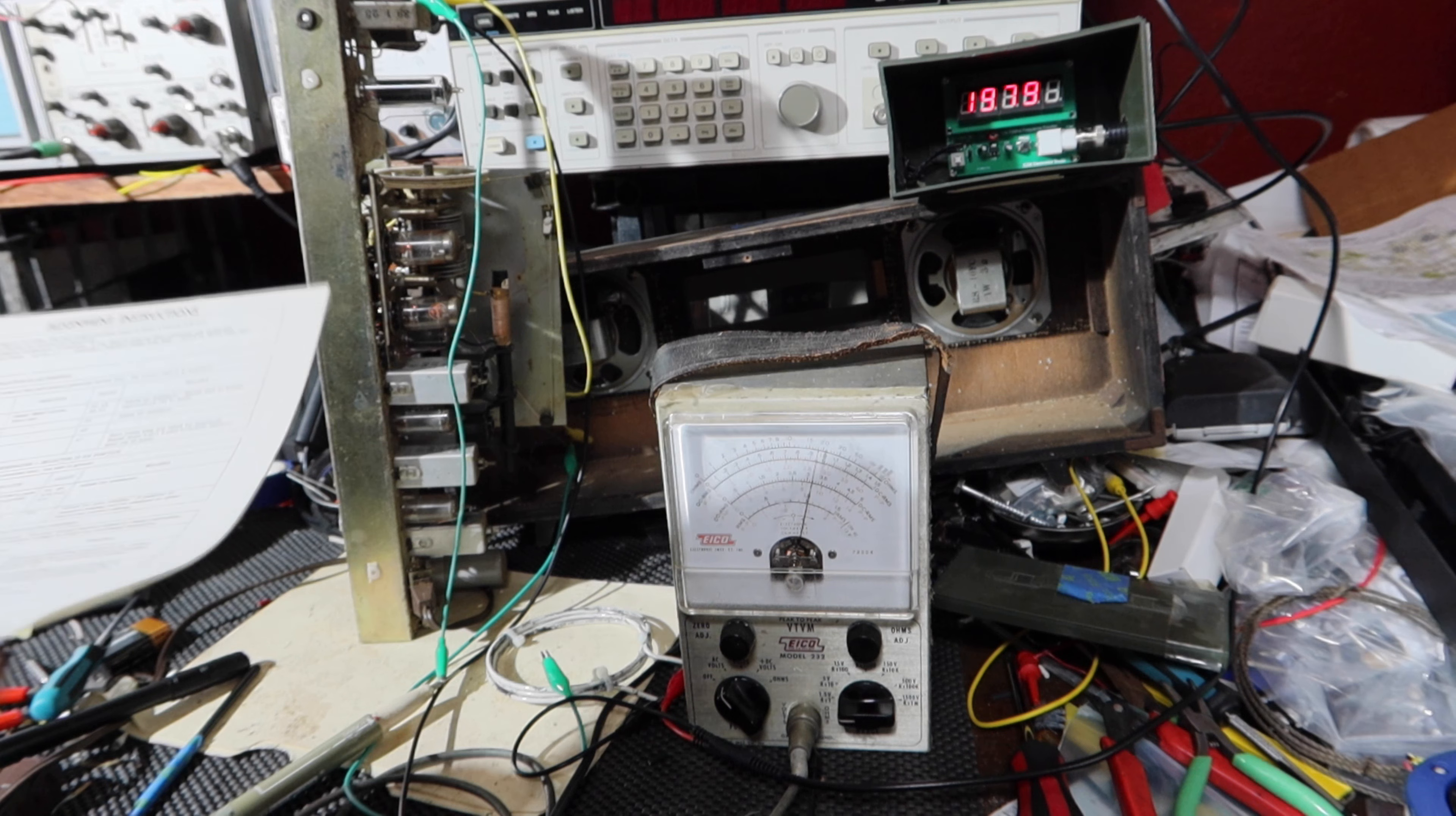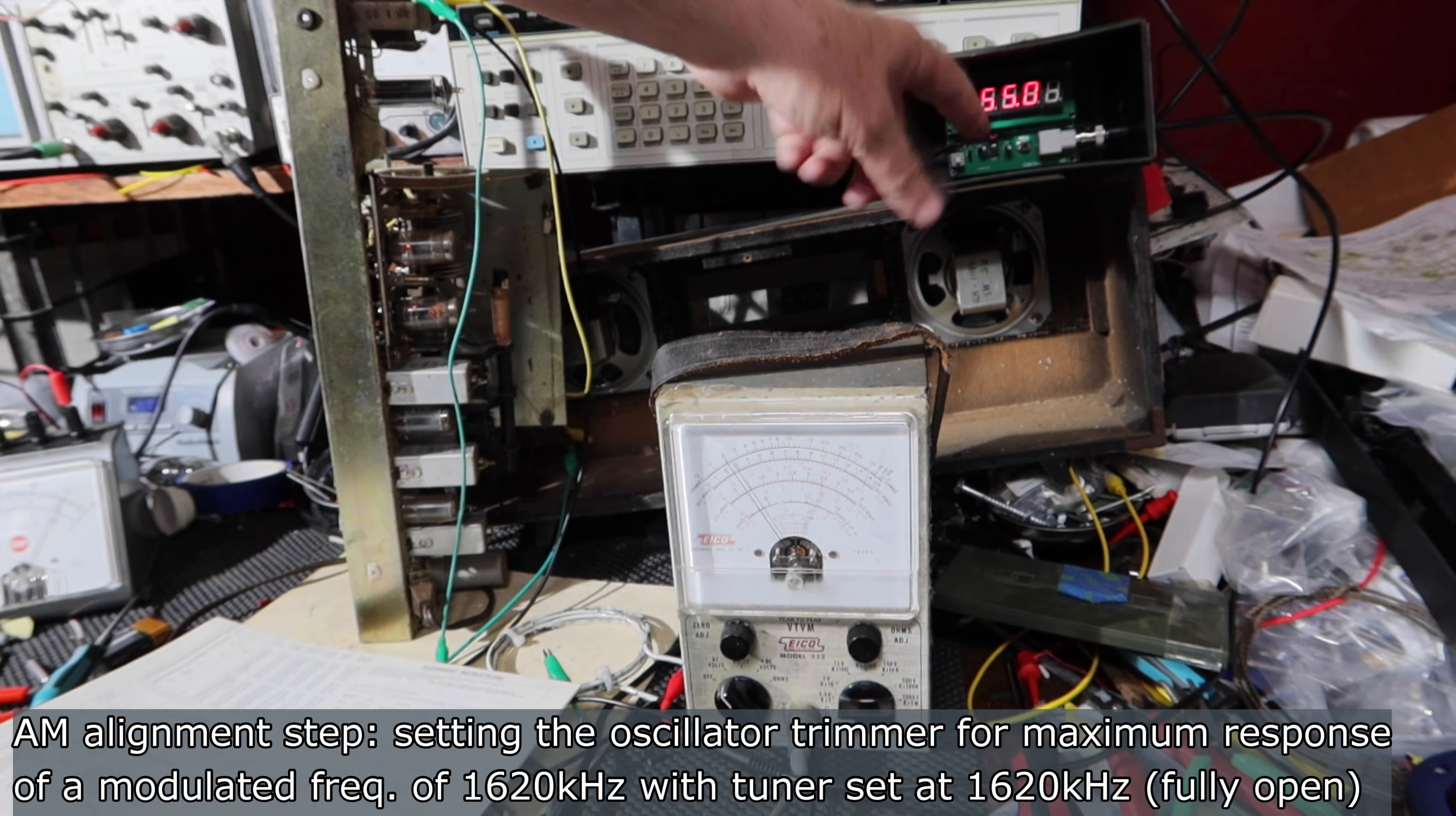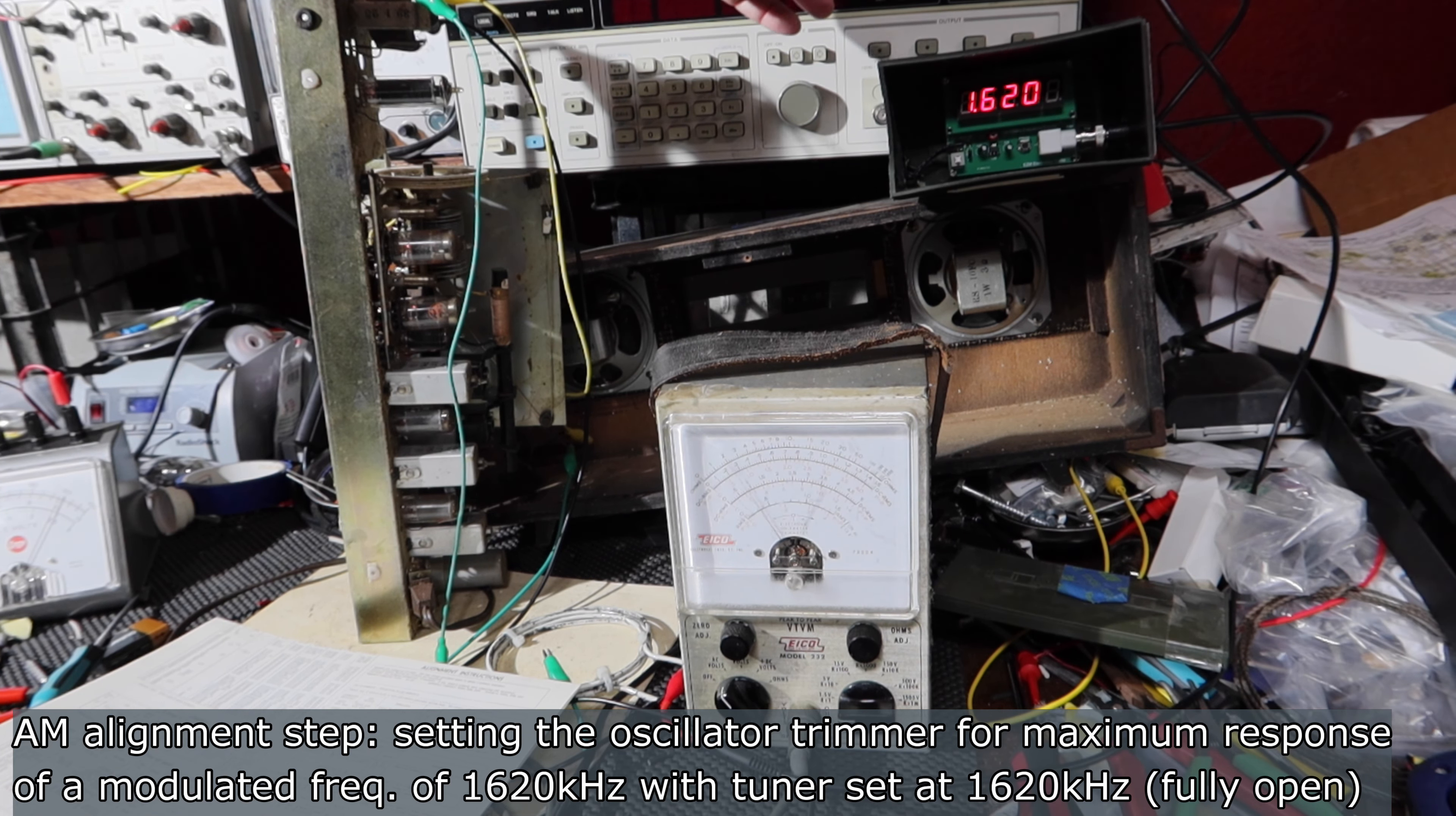Alright, so we got the first set done. Now what we're going to do is put the frequency generator at 1620, leaving the gang fully open. Alright, so let's go 1620 on the frequency generator. So we're going to go here, switch scales, 1620. Once again, I'm adjusting the frequency generator up here. Alright, 1620 please. 1620. Okay, oscillator back on, the modulator back on.